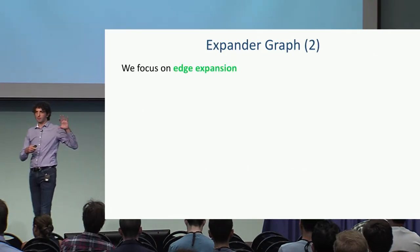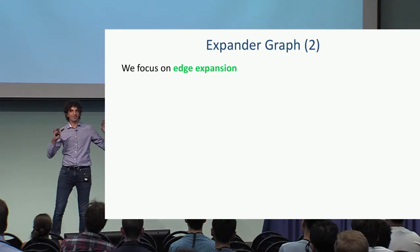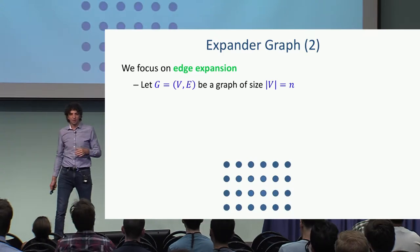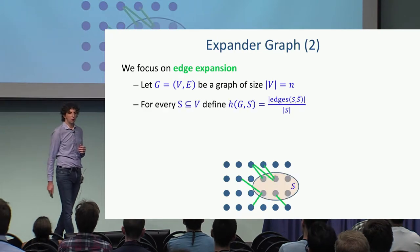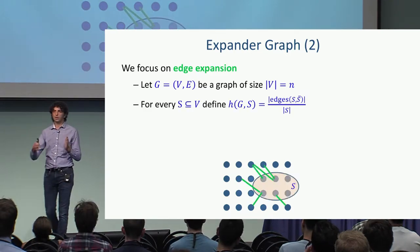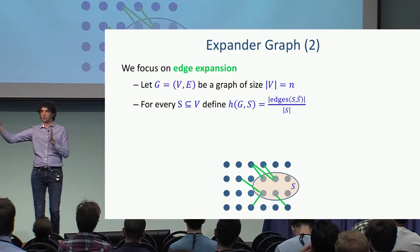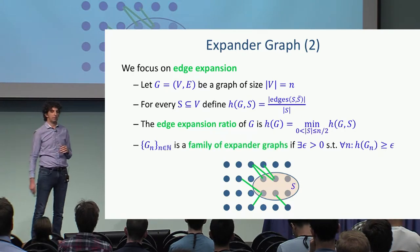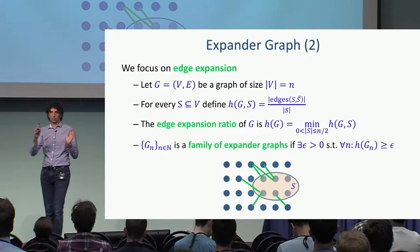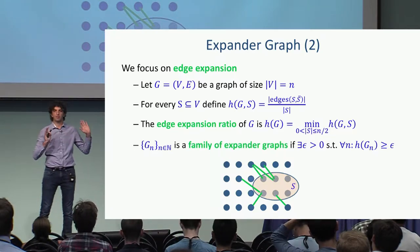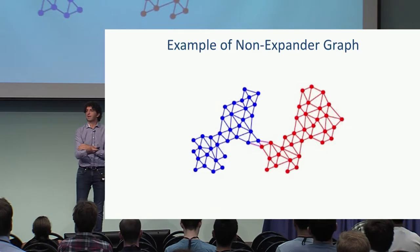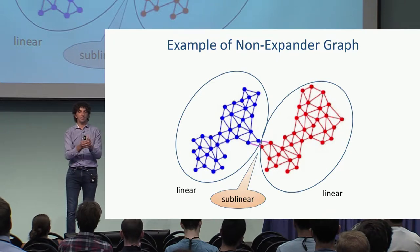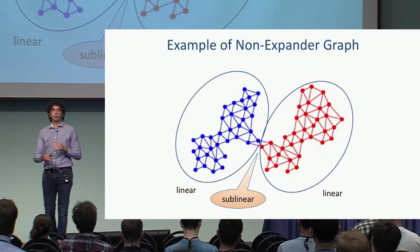More formally — and this is the only technical slide — we look at edge expansion. For a graph of nodes, we look at every subset of nodes and the ratio between the number of edges going outside the set to the size of the set. We take the minimum over all sufficiently small sets. If this value is bounded below by some positive constant as the number of nodes grows, we say the family of graphs is an expander. A graph is not an expander if we can split it into two linear-size sets with only a sublinear cut between them.